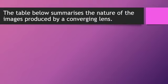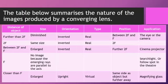The table below summarizes the nature of the images produced by a converging lens. If the distance of the object is further than 2F, the size of the image is diminished, it is inverted, real, found between 2F and F, and this applies to the eye or the camera.